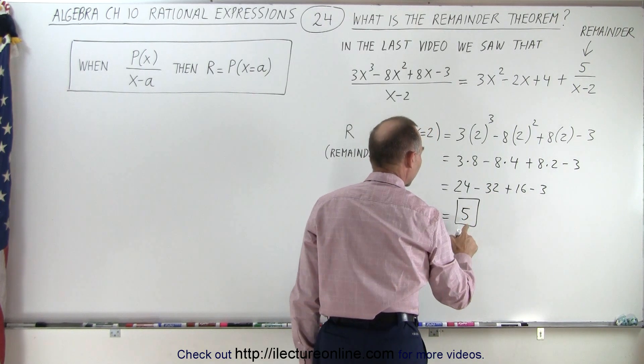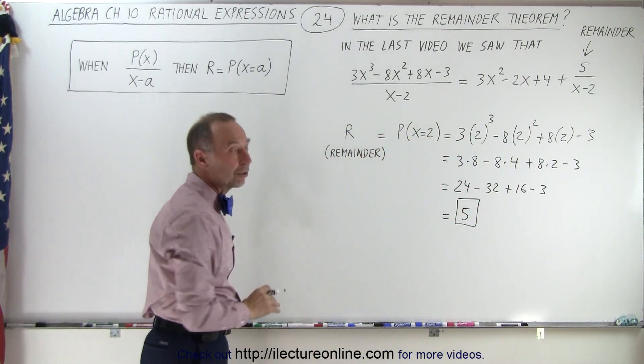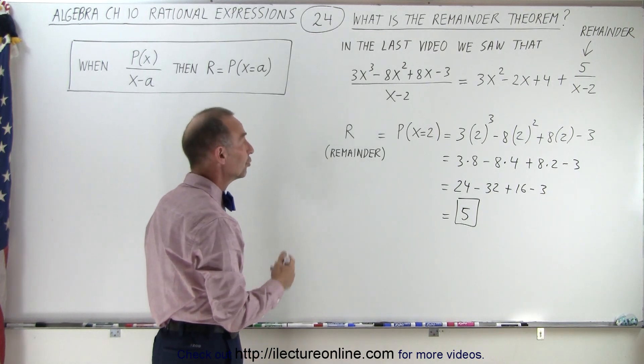And notice we get the exact remainder that we were expecting, the number 5. But this is a very easy method to figure out if it does indeed have a remainder, yes or no.